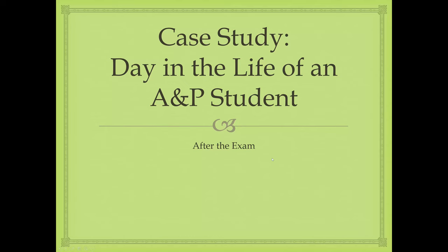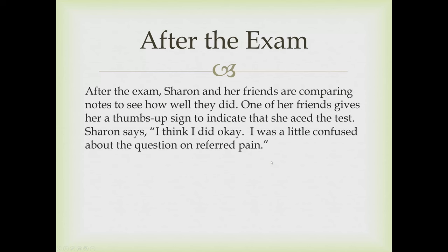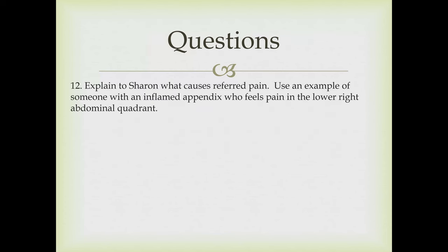After the exam, Sharon and her friends are comparing notes to see how well they did. One of her friends gives her a thumbs up sign to indicate that she aced the test. Sharon says she thinks she did okay but was a little confused about the question on referred pain. Question twelve: explain to Sharon what causes referred pain, using the example of someone with an inflamed appendix who feels pain in the lower right abdominal quadrant.